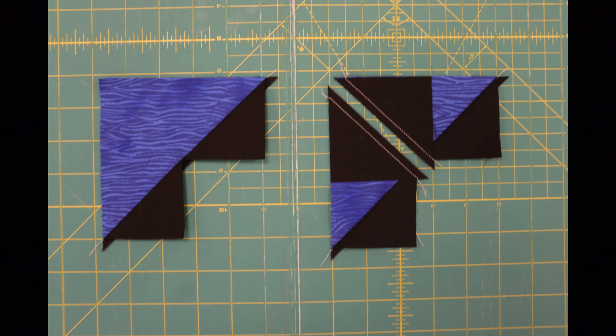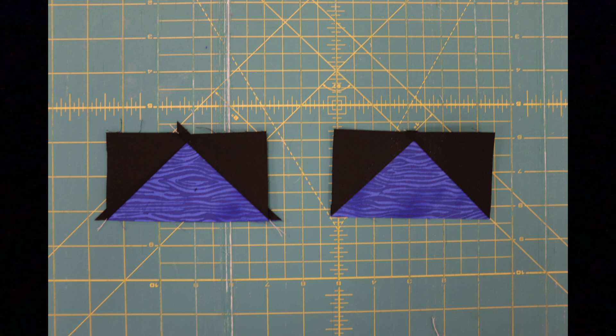Then you're going to iron those toward the triangles or open, and repeat the process with one more accent square for both of your pieces. So you line up that accent square just as shown. You're going to sew a quarter inch on each side, cut it, and then once you iron these, you are going to end up with four flying geese blocks that measure four and a half inches by two and a half inches.